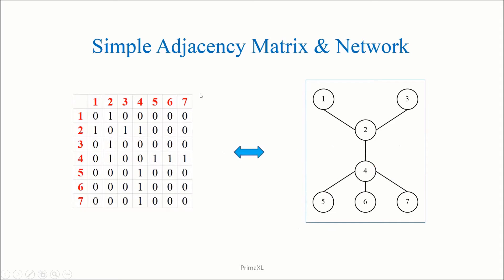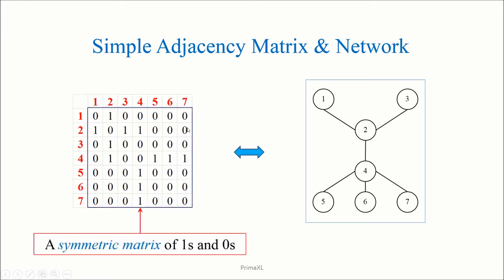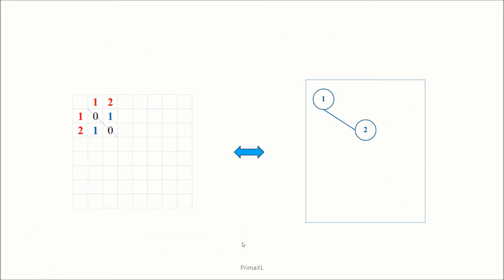So far, so good. Now, we can use a matrix to represent a network mathematically. This matrix is called a simple adjacency matrix. It is a symmetric matrix of ones and zeros. In order to illustrate how a matrix can represent the network, let me show you step by step. Suppose that we have two nodes labeled 1 and 2, which are connected by an edge.